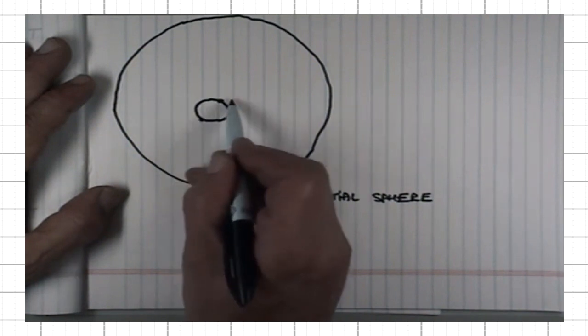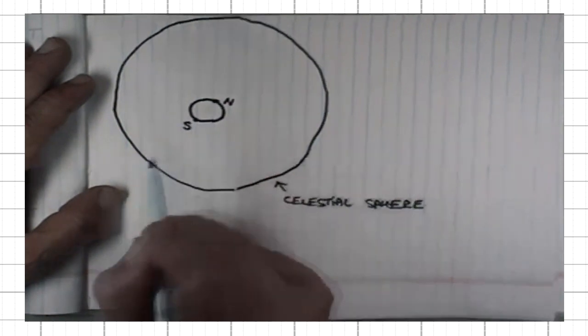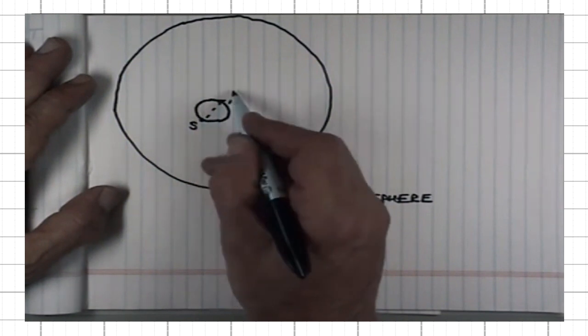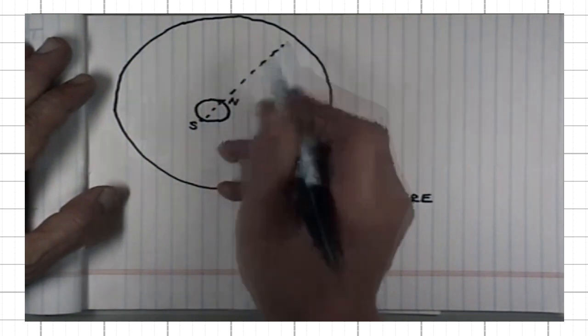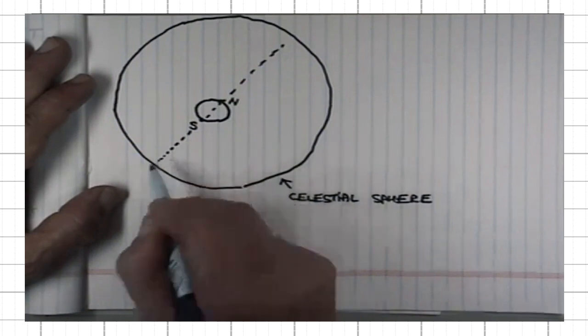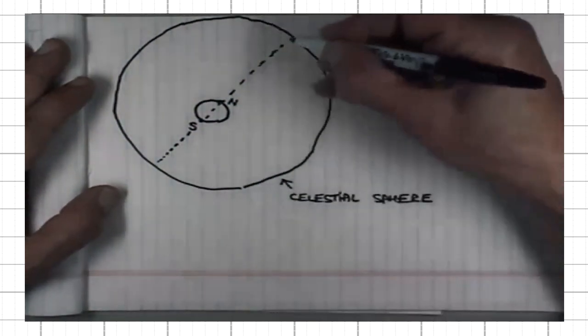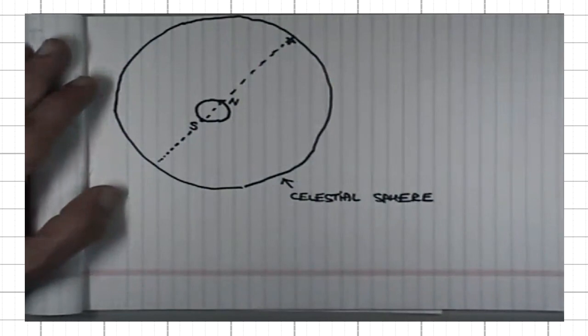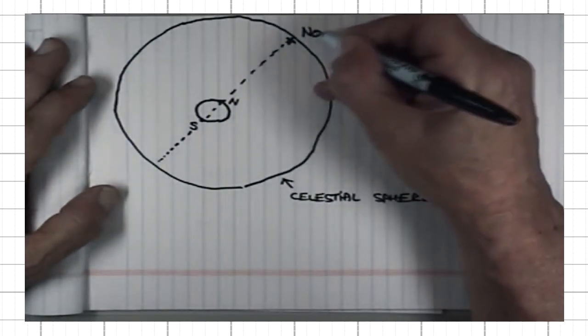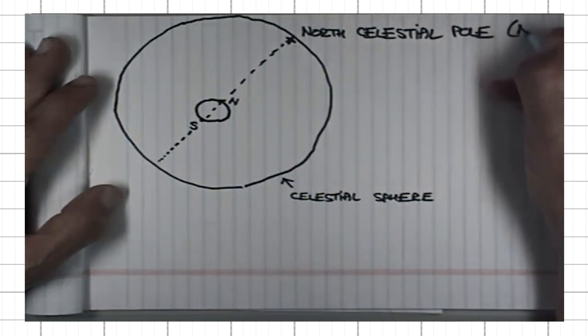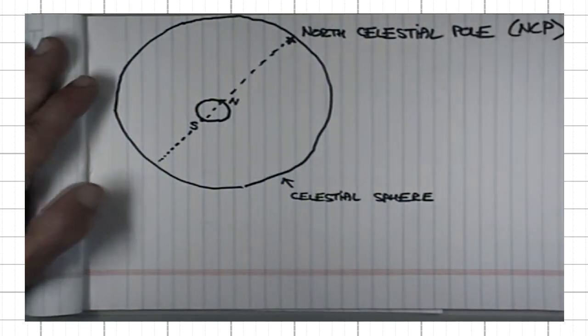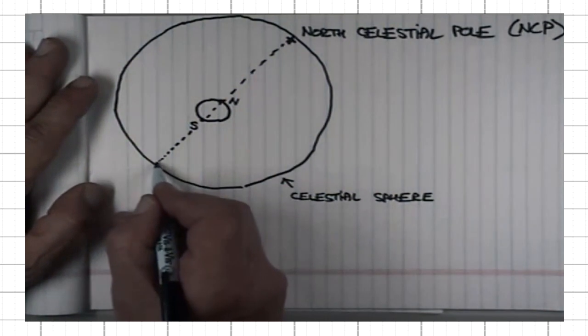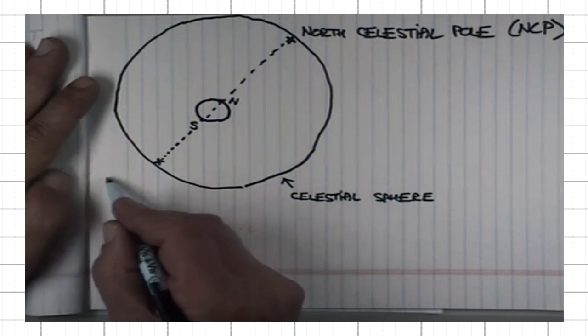Here is the Earth's north pole, south pole, the Earth's spin axis. If I would extend it all the way out to celestial sphere, it would puncture it at two points. One that is directly above the Earth's north pole, and it's called North Celestial Pole, or NCP in short. The one that is directly above the south pole is called South Celestial Pole.